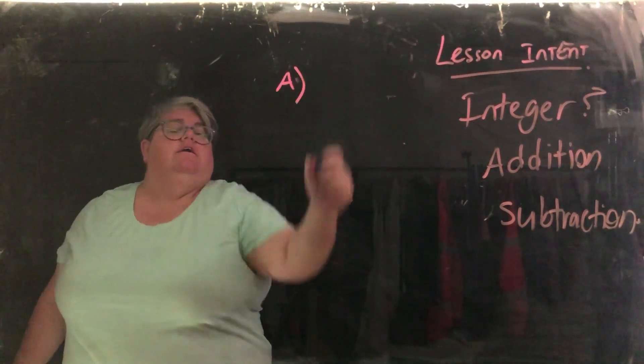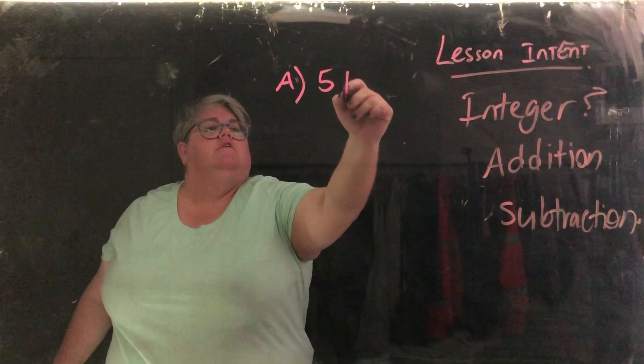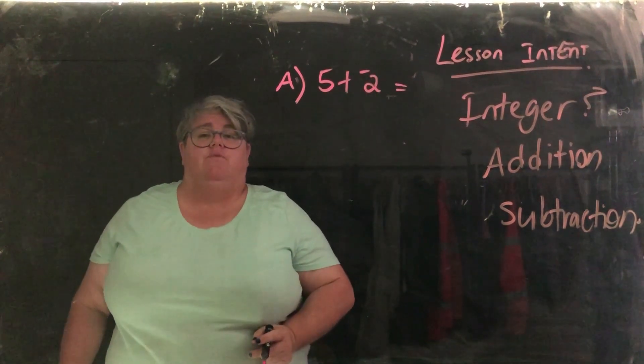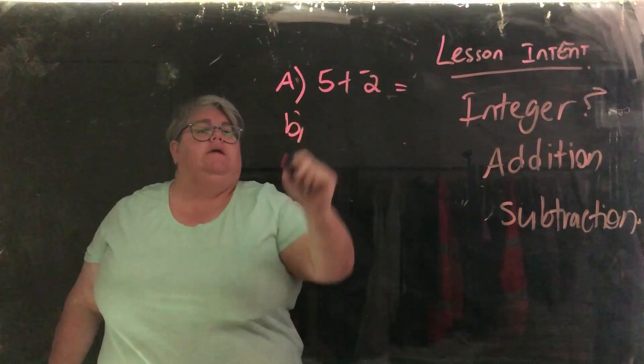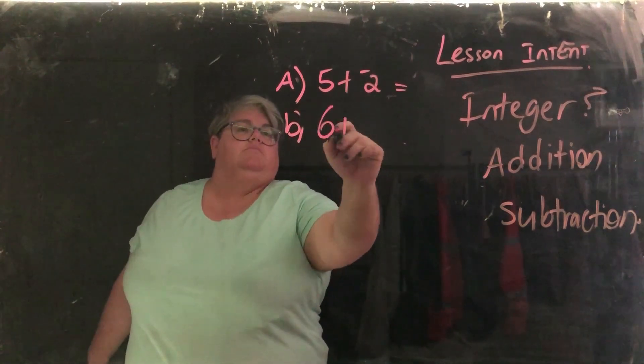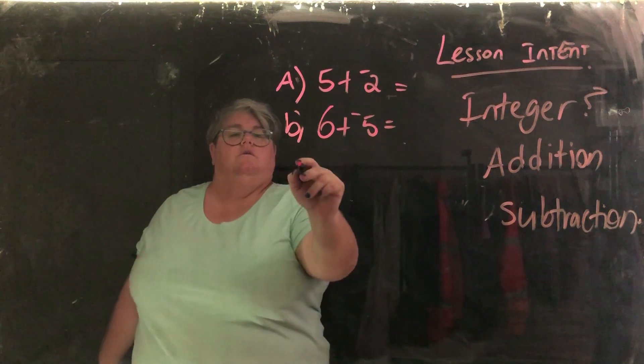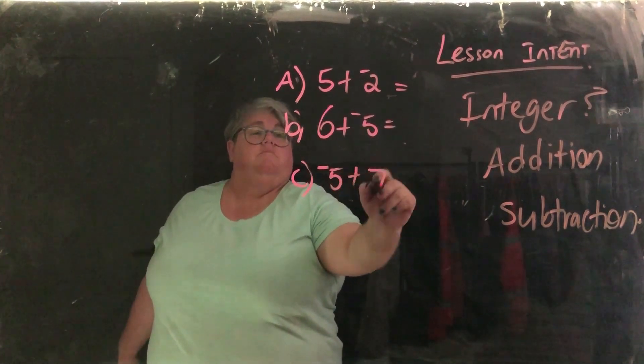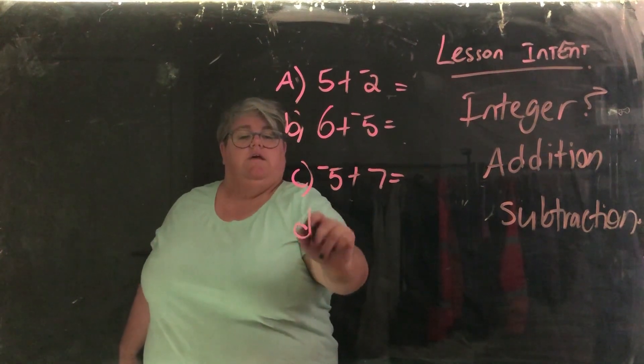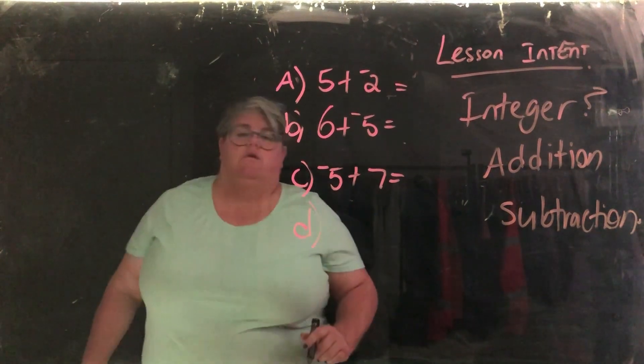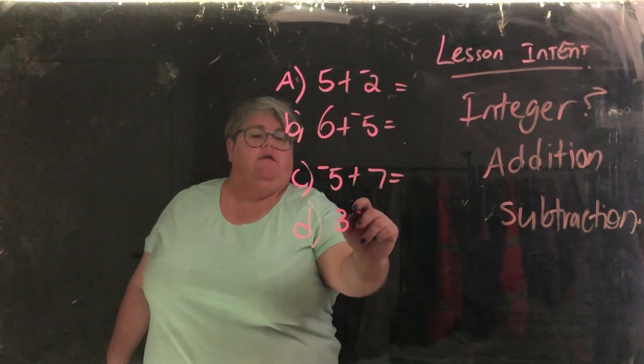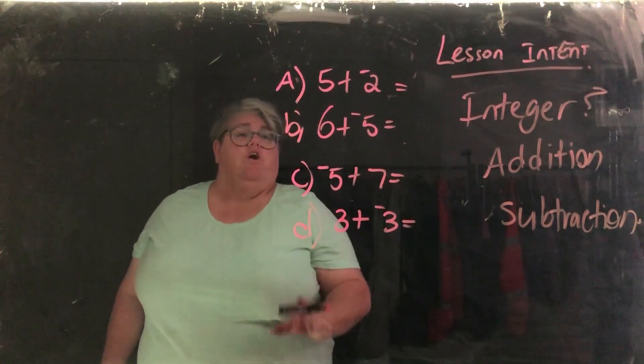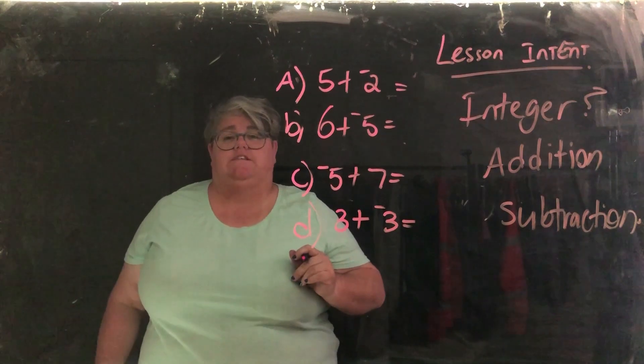So let's go at number A. Let's go 5 plus negative 2. Work out the answer for that one. B, 6 plus negative 5. C, negative 5 plus 7. And last but not least, D, 3 plus negative 3. So have a go and let's have a look at those answers once you're finished.